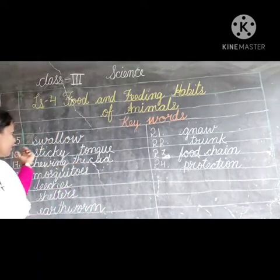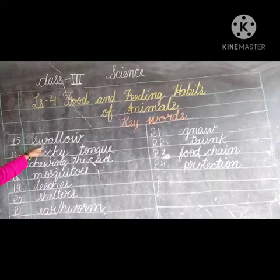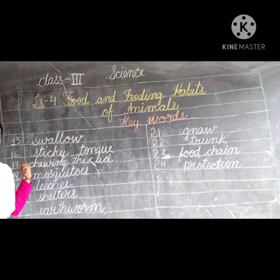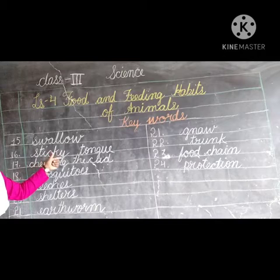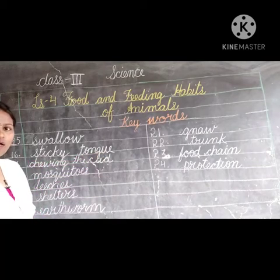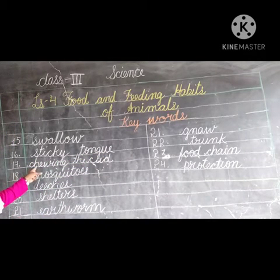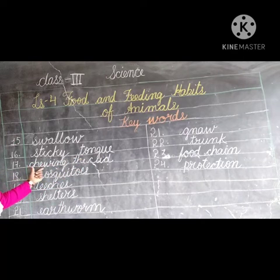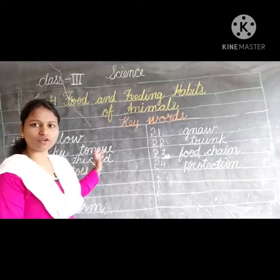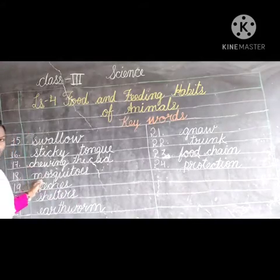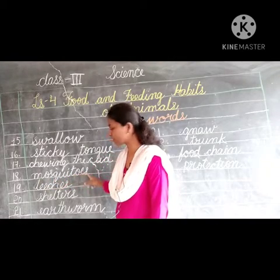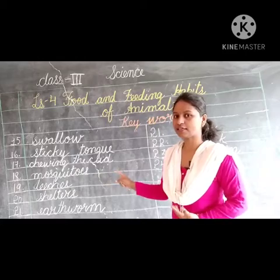Next one is 'swallow' - S-W-A-L-L-O-W. Next, 'sticky tongue' - the frog has a sticky tongue. S-T-I-C-K-Y, sticky, T-O-N-G-U-E, tongue. Next, 'chewing the cud' - C-H-E-W-I-N-G, the, C-U-D - not 'cub', it is 'cud'. Next, 'mosquitoes' - M-O-S-Q-U-I-T-O-E-S. The ending forms as E-S.